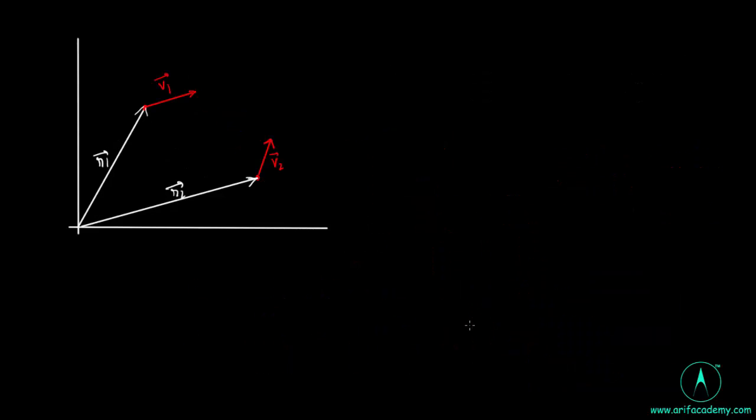We see in this diagram r1, r2 are position vectors of two particles and their velocities are constant. Hence, these two particles will move in a straight line. As shown in the diagram, this particle moves in a straight line and these two lines intersect at a point.